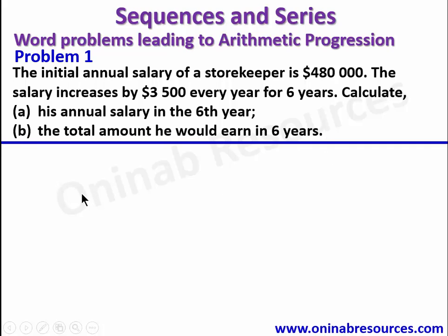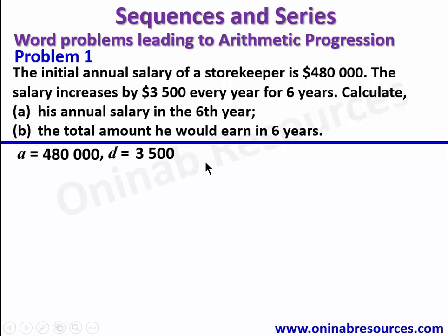In our solution to this problem, we already know that this is an arithmetic progression with first term A = $480,000. The salary increases by $3,500 every year, so our D will be $3,500. And since it is a period of 6 years, our N will be equal to 6. Now for part A — his annual salary in the 6th year — we are going for the 6th term of the arithmetic progression.